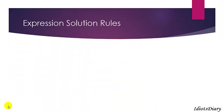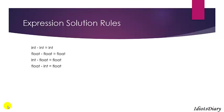Some other rules for expression evaluation are discussed here. For example, int and int calculation returns an integer output. Float and float calculation returns a float output. The output will always be of the larger data type. If you are unable to understand this, don't worry, we will discuss some examples.